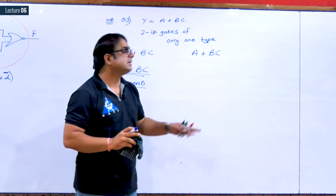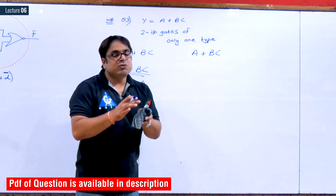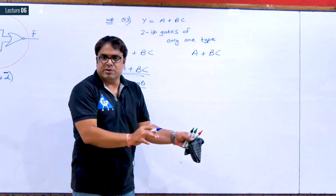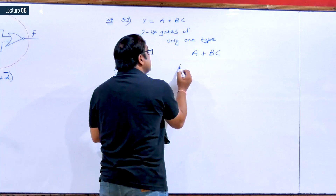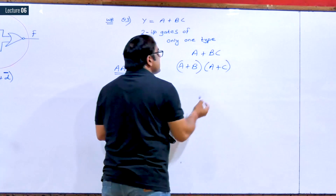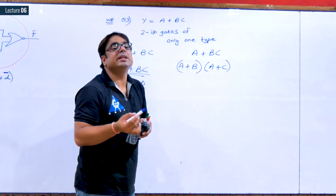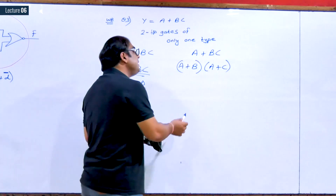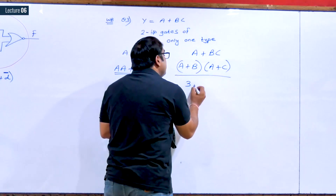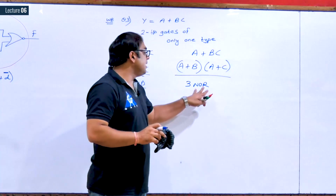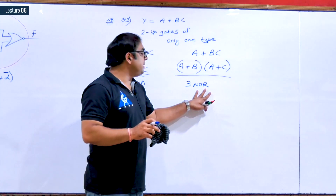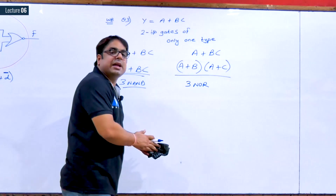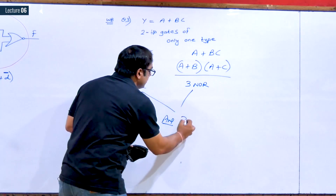For the NOR gate solution, using the distributive law: A+BC = (A+B)·(A+C). This fits the format (A+B)·(C+D), which can be implemented using three NOR gates. Coincidentally, both the NAND and NOR approaches give three gates, so the final answer is three gates.